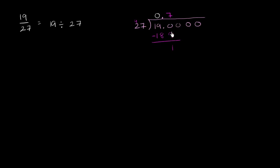We can bring down another 0. 27 goes into 10 zero times. 0 times 27 is 0. Subtract. We have a remainder of 10. But now we get to bring down another 0. So let's bring down this 0 right over here.